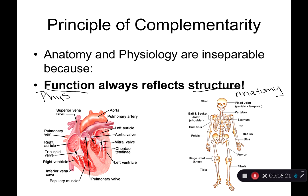For example, how blood moves through the heart — its function — can't be understood without knowing all of the chambers, large vessels, and structural parts of the heart. Another example: the elbow joint can only flex and extend in one plane. It doesn't rotate or move like the hip or shoulder because of the anatomy of the joint — how those bones fit together. Function reflects structure. This is the principle of complementarity, which is why we always study anatomy and physiology together.